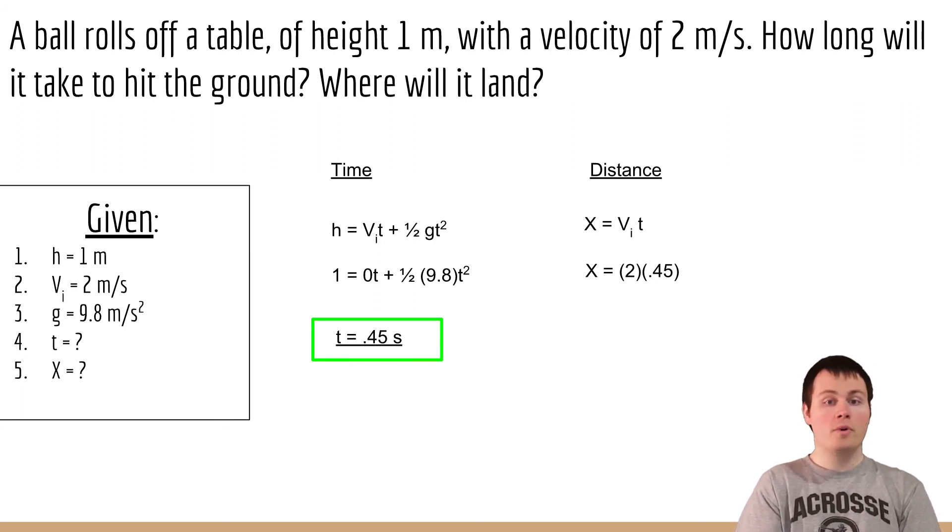And we now know from part one how long it was in the air, at point four five seconds. Just take those two, multiply together, and we get the distance is equal to 0.9 meters.